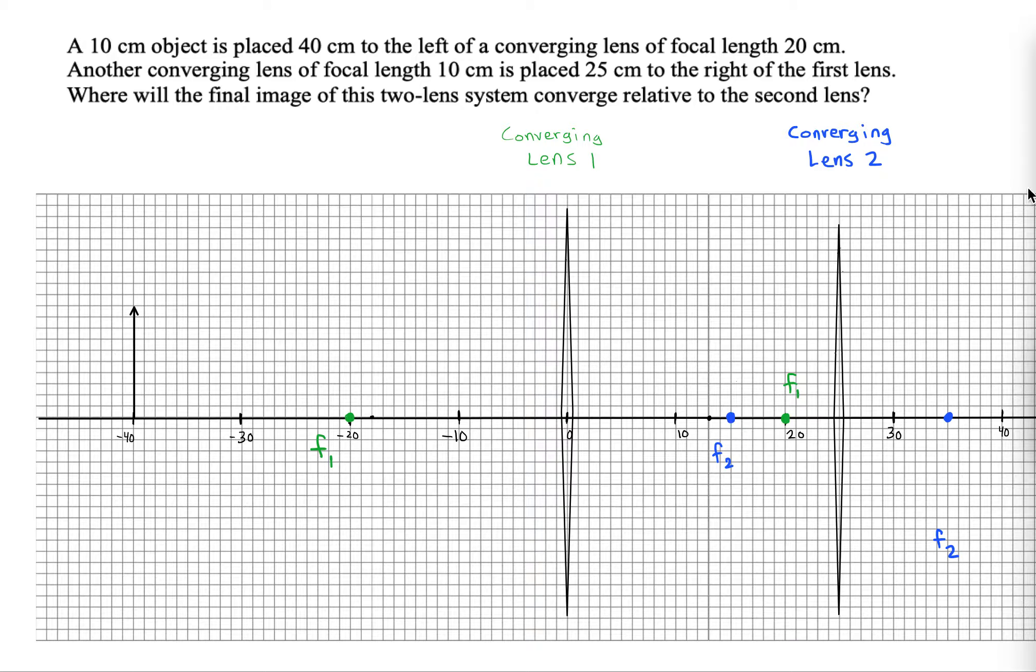Well, we have to draw rays from the tip of our object toward the lens. One of the important rays is the parallel ray. That ray is going to be bent through focal point 1, so let's bend that ray through focal point 1.